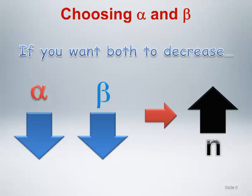Note that when a trial is described as being underpowered, this is a reference to the type 2 error being too large, with the concern being that there is an important difference between the treatment arms that is not identified by a test of hypothesis as being statistically significant.